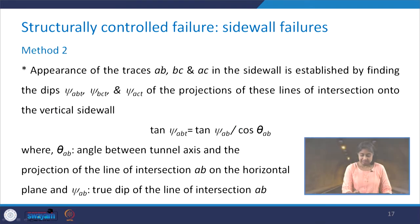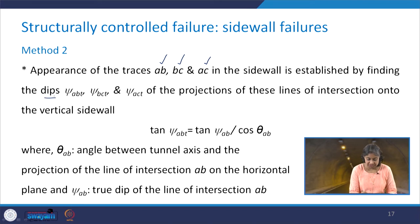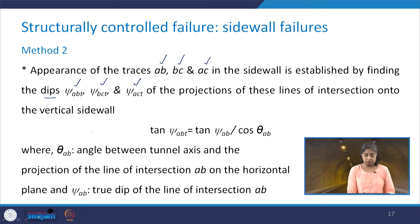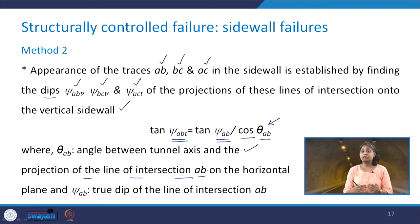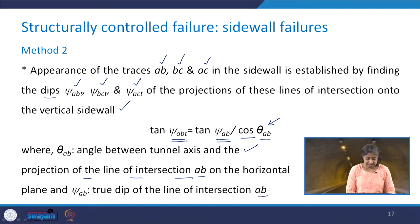The appearance of traces A–B, B–C, and A–C in the side wall is established by finding their dips psi_AB,T, psi_BC,T, and psi_AC,T of the projections of the lines of intersection onto the vertical side wall, using the expression: tan(psi_AB,T) = tan(psi_AB) / cos(theta_AB). Here theta_AB is the angle between the tunnel axis and the projection of the line of intersection A–B on the horizontal plane, and psi_AB is the true dip of the line of intersection A–B. In the stereographic projection, theta_AB, theta_AC, and theta_BC can be read directly from the plot.